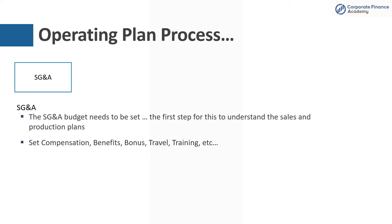The next piece is SG&A. Your SG&A budget needs to be set, and the first thing you have to do is understand your sales and production plans. You'll set things like compensation, benefits, bonuses, travel, and training. One thing to note about SG&A is that it's often the most emotional element of the planning process — because you're talking about people's compensation, their benefits, their bonuses, and how many people leaders can have on their team to get the job done.